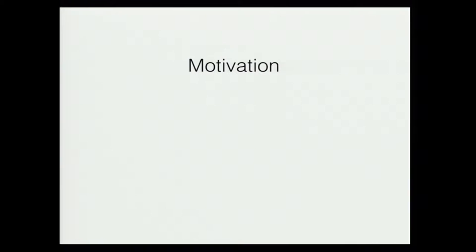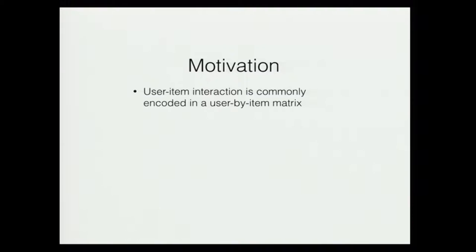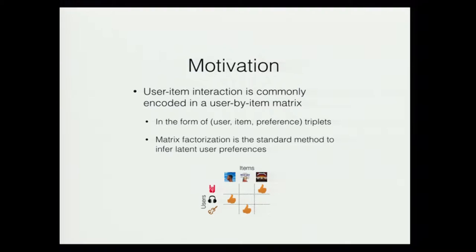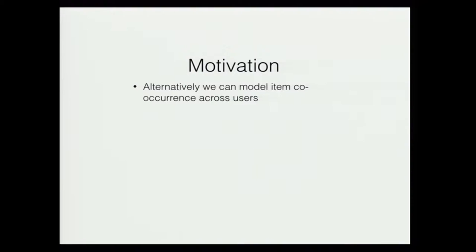A little bit of motivation. In recommender systems, user-item interaction data is normally encoded as a user-by-item matrix in the form of user-item preference triplets. Here's a typical example of such a matrix with three toy users and three items, where we express preference in terms of scores. Matrix factorization is a standard method to infer the user latent preference from such data. However, matrix factorization is actually only one form of modeling assumption.